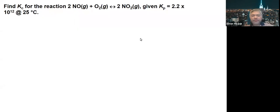Okay, now in another problem, we are asked to find Kc for the reaction 2NO + O2 producing 2NO2, given Kp = 2.2 × 10^12 at 25°C.